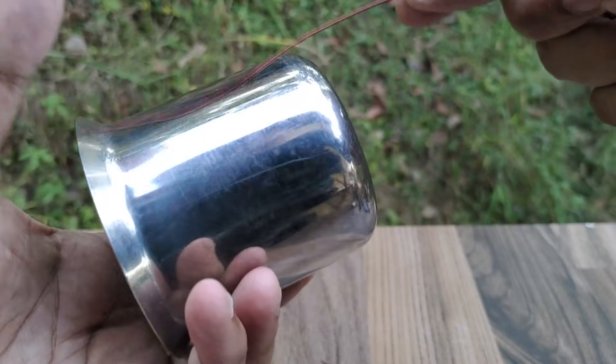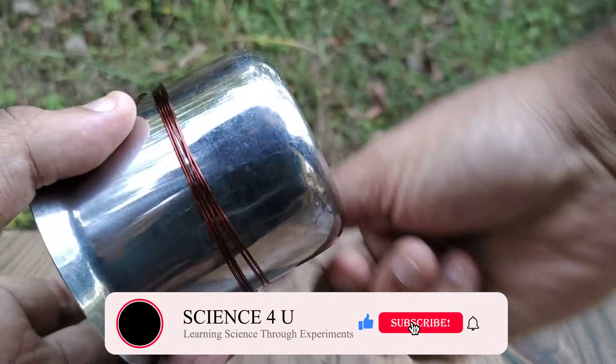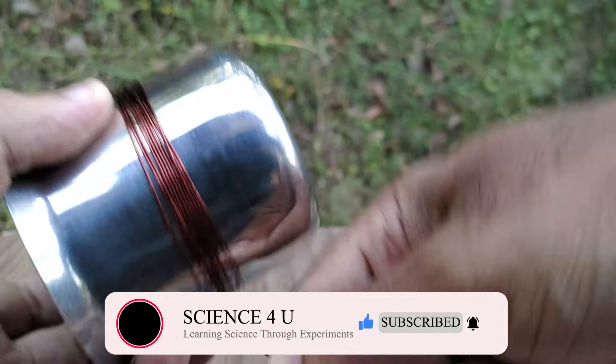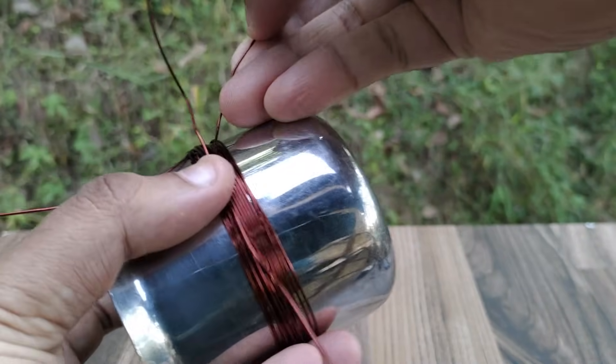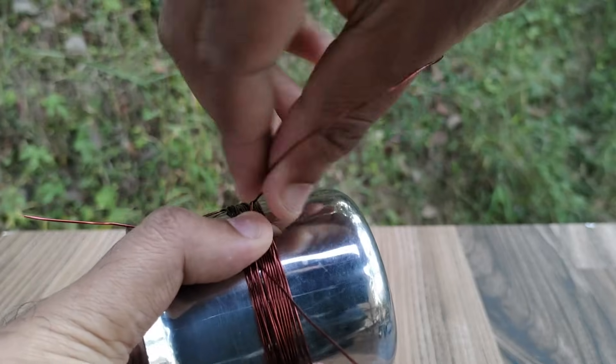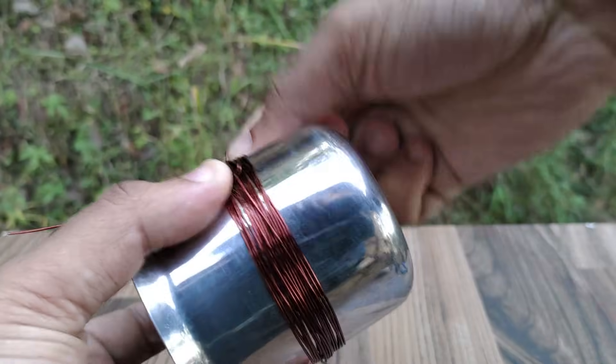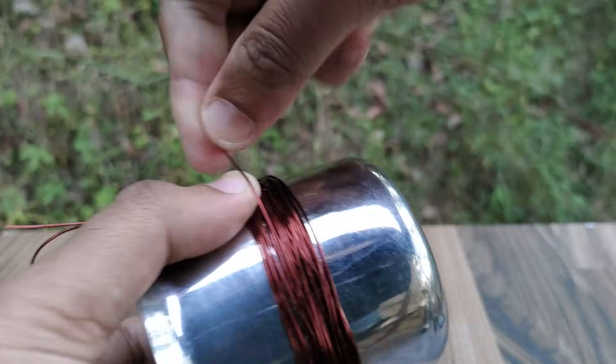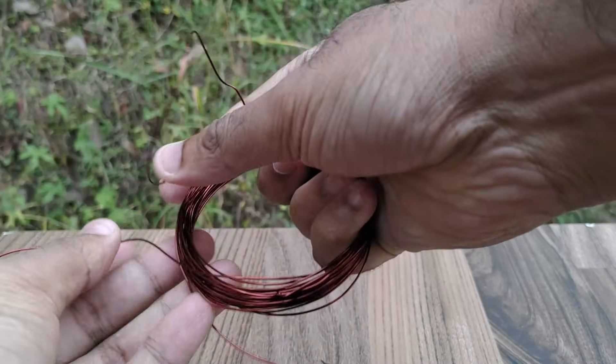Now we will make the transmitter coil. For this first we have to wind 15 turns of the coil as shown. After 15 turns we have to make a loop in the coil. Then again continue to wind in the same direction and make another 15 turns. This makes a total of 30 turns in the transmitter coil also, but with a loop at the middle. Remove the coil from the glass and stick tape at three locations so that the coil doesn't come loose.